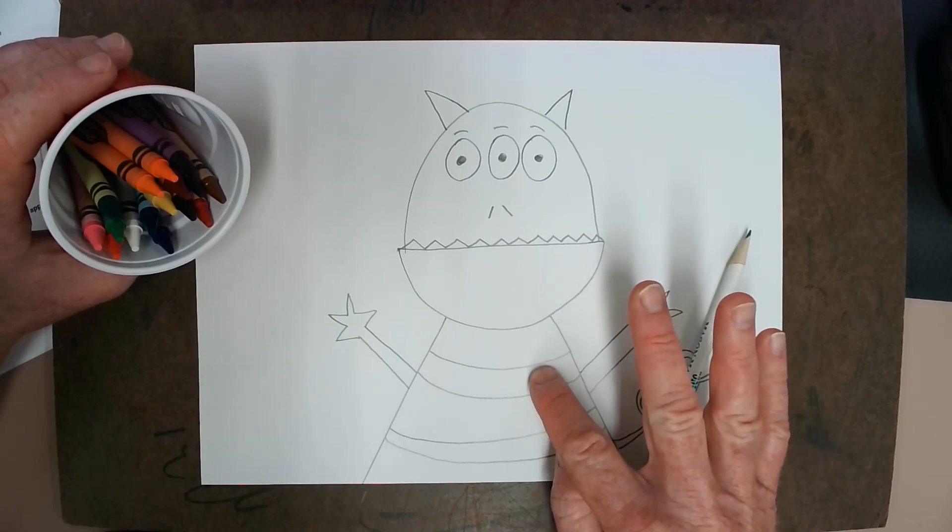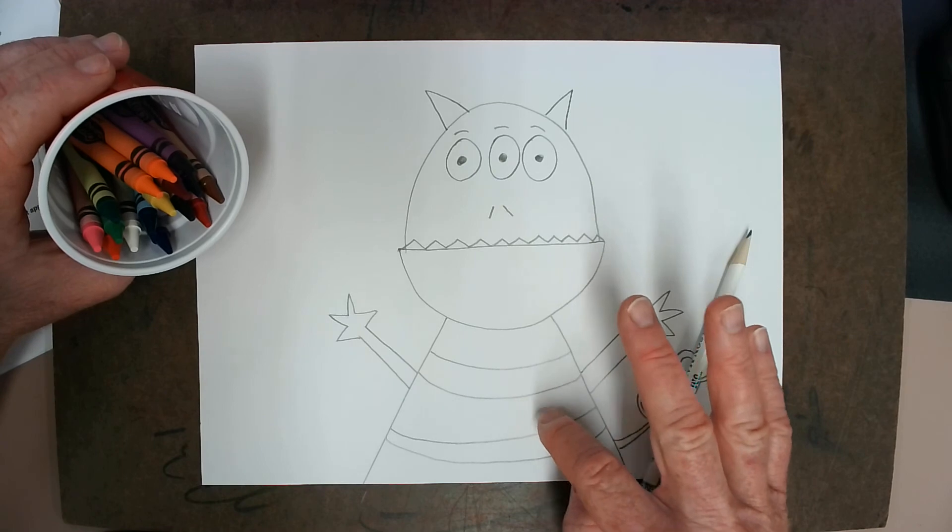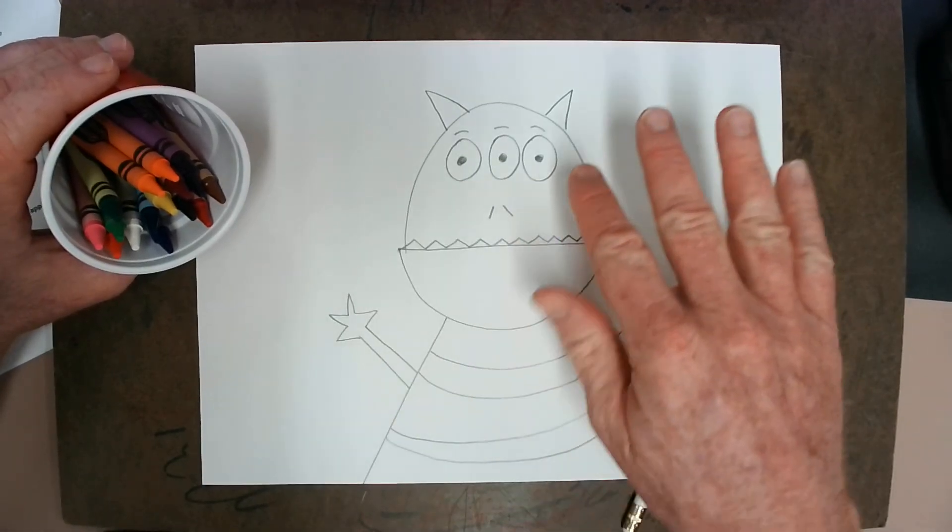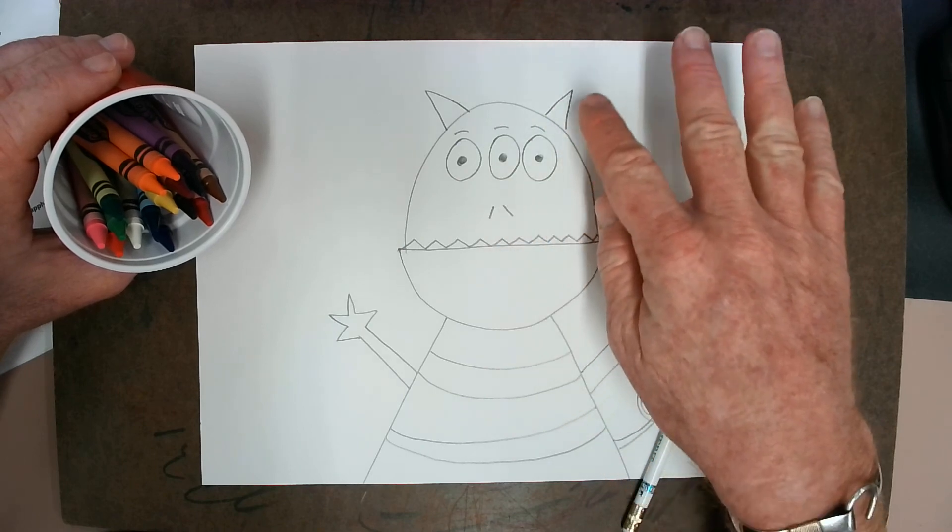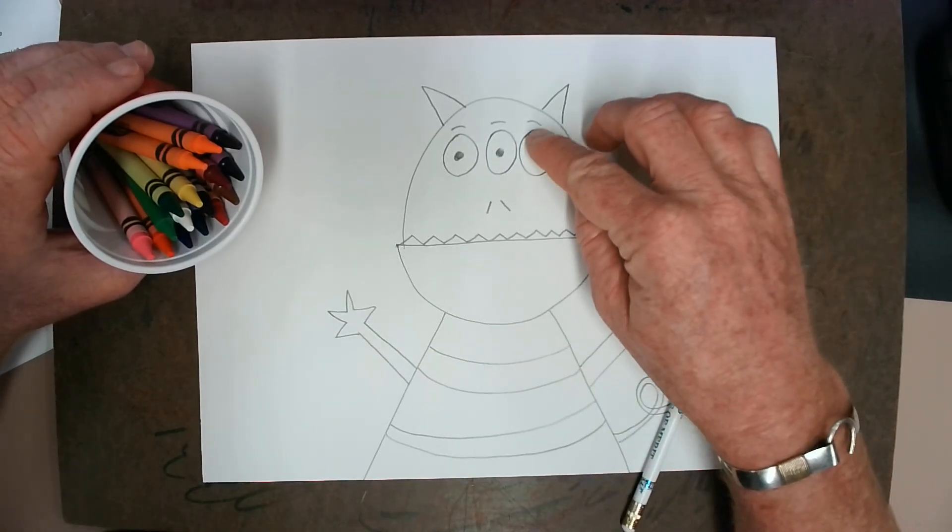I'm probably going to color the stripes maybe red. And then maybe I'll use blue for the other stripes. And then I'll color my monster maybe with some light green and color in the details. But I'm going to leave the teeth and this part of the eyes white.